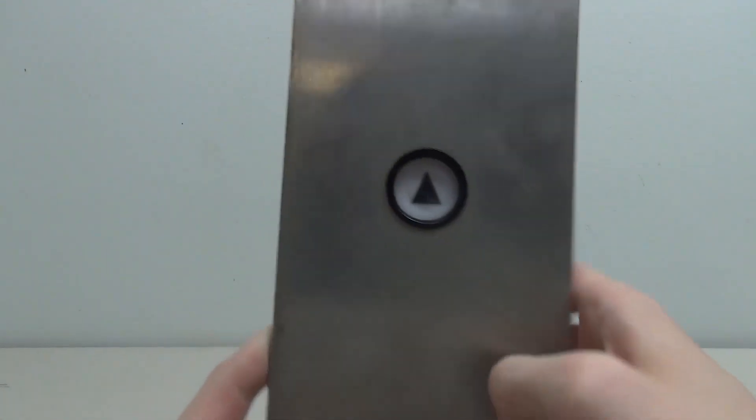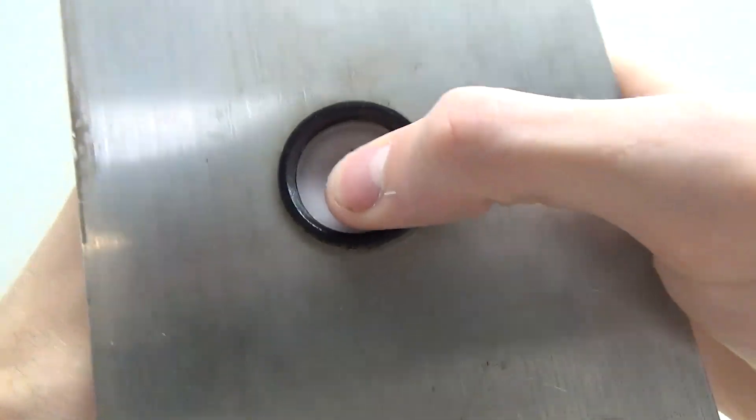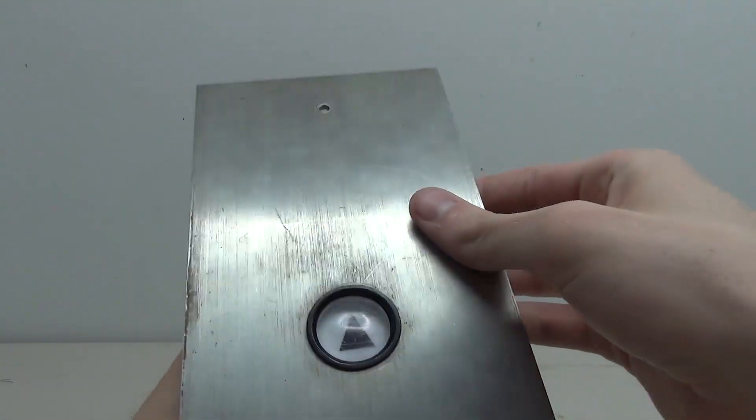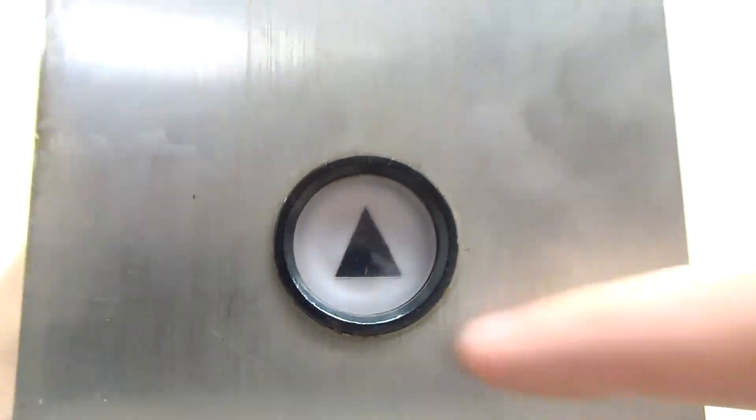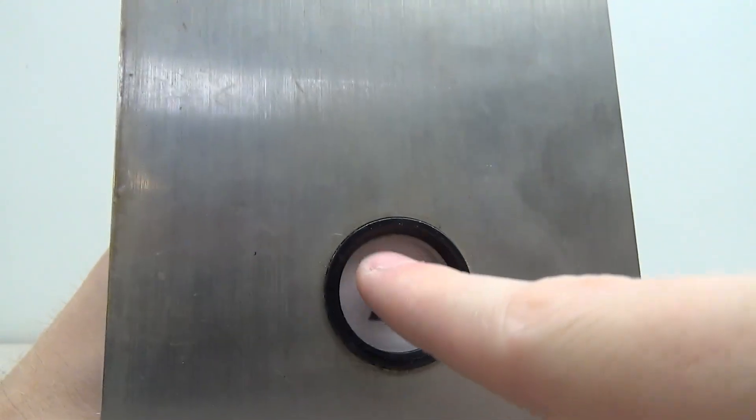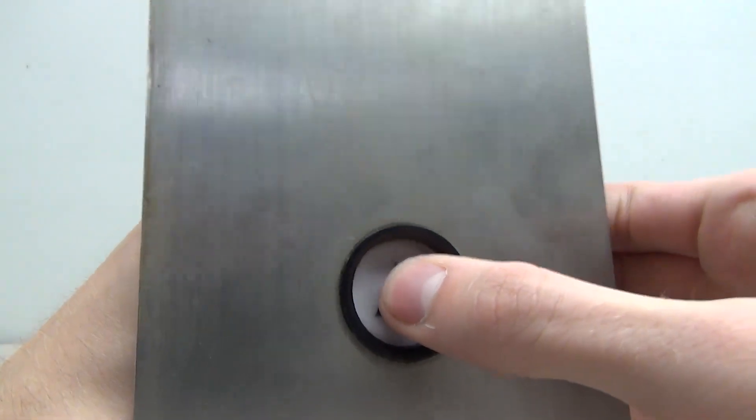So first we'll start with the call button. This button here you can see is pretty basic, we've just got the little button in the middle. The actual plate is pretty dirty so we'll be fixing that, pretty simple. As for the button, it's just your typical little Montgomery button here, and when you press it you can hear the contacts on the back.